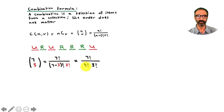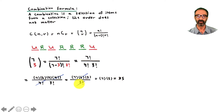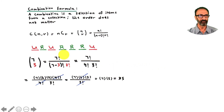Computing C(7, 3): seven minus three factorial is four factorial. Writing it out, 7 × 6 × 5 × 4! divided by 4! × 3!. The four factorials cancel, leaving 7 × 6 × 5 on top. Three factorial is 3 × 2 × 1 = 6, so the 6 cancels, and we get 7 × 5 = 35.